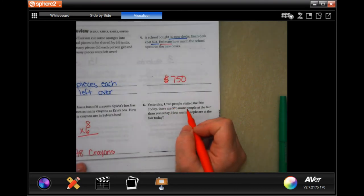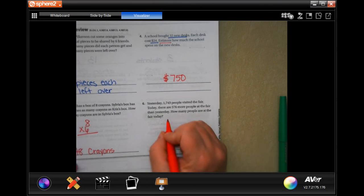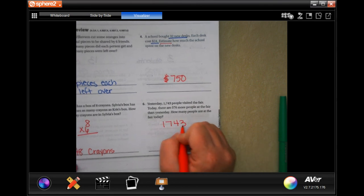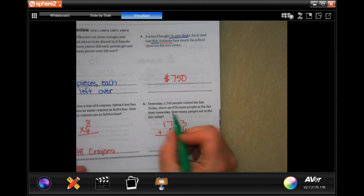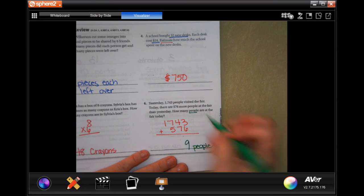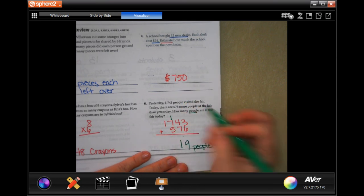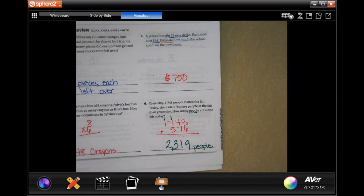Yesterday, 1,743 people visited the fair. Today, there are 576 more people at the fair than yesterday. How many people are at the fair today? Well, we're just going to take that 1,743, and we're going to add 576. It doesn't say how many more people. We're not finding the difference. We're finding out how many altogether, and we're measuring it in people. So, 3 plus 6, 9. 4 plus 7, 11. Carry that 1. 1 plus 7 is 8, plus 5, 13. Carry that 1. And 1 plus 1 is 2. 2,319 people.